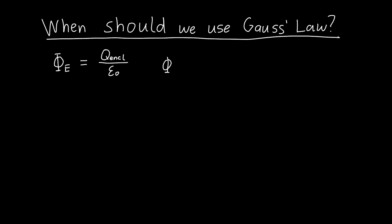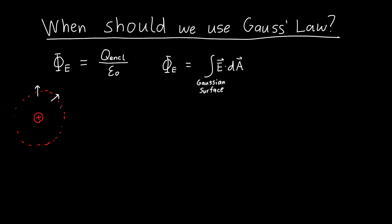The electric flux is basically adding up all of the electric field leaving a given Gaussian surface. For example, if we have a point charge, we can choose a spherical Gaussian surface to surround it, and then integrate all of the electric field pointing out of that surface dotted with dA.